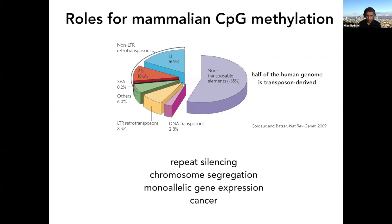DNA methylation also plays a role in chromosome segregation, though that's relatively poorly understood. It plays a critical role in monoallelic gene expression — for example, maintenance of silencing on the inactive X chromosome in human females. And there's a large body of evidence indicating a role for changes in DNA methylation in human cancers.